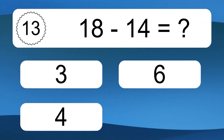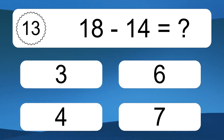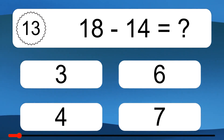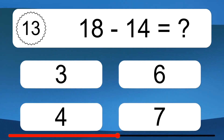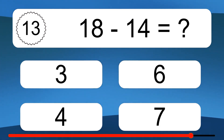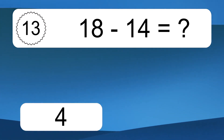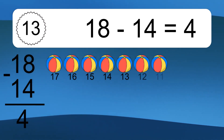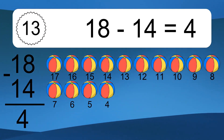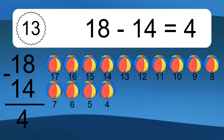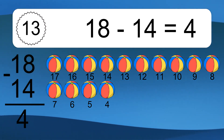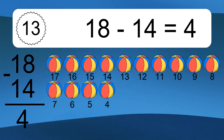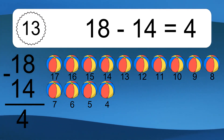18 minus 14 equals what? 18 minus 14 equals 4. Let's count it. 17, 16, 15, 14, 13, 12, 11, 10, 9, 8, 7, 6, 5, 4.